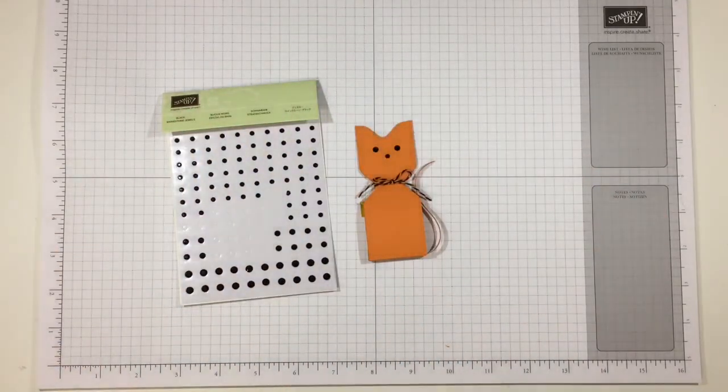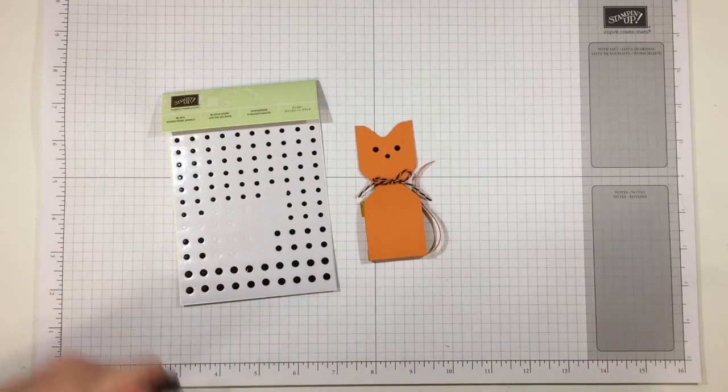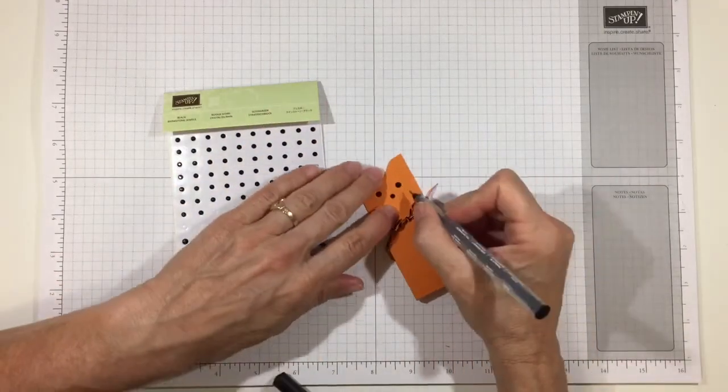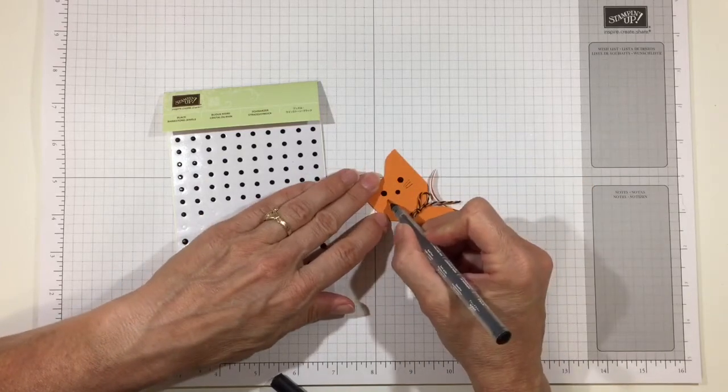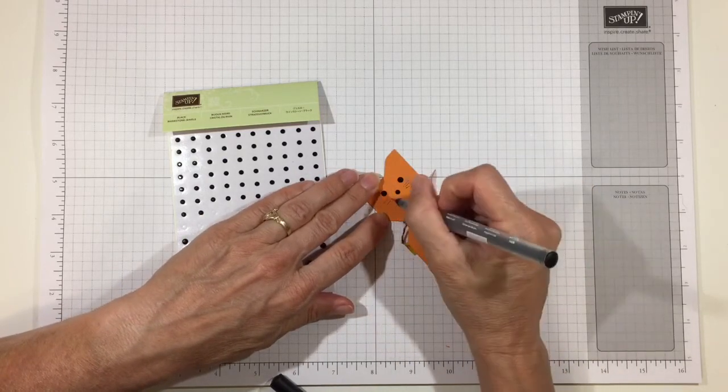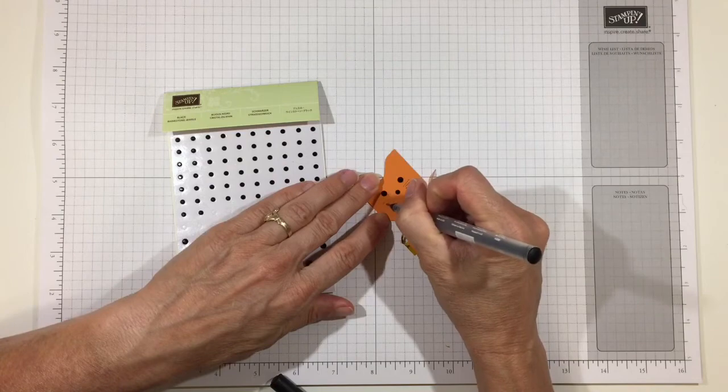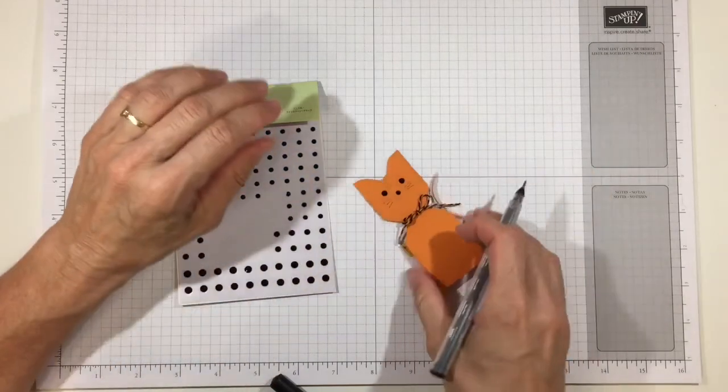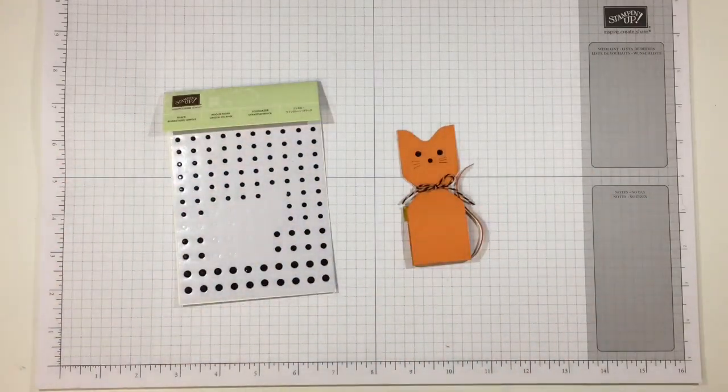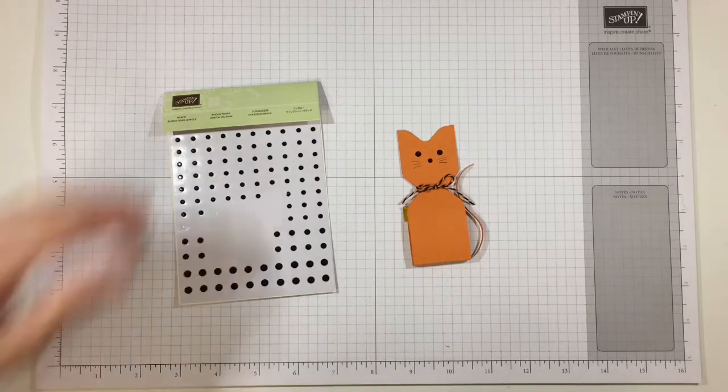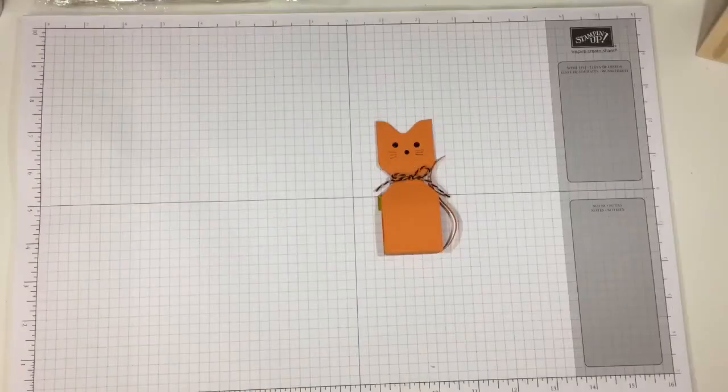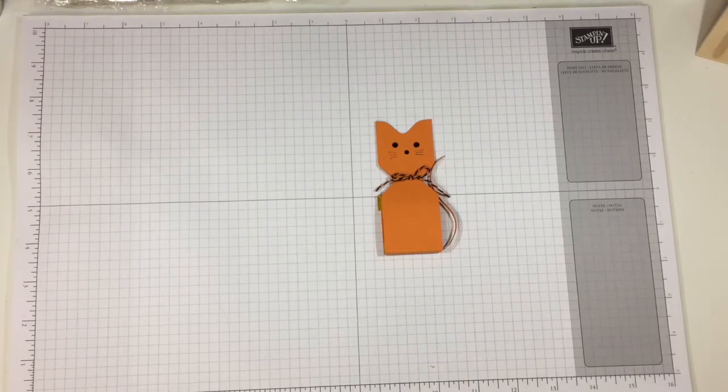And isn't he so cute? On some of them I also took a bit of a journaling pen and I just gave a few whiskers. My journaling pen looks like it's running out of ink, I guess I've been writing too much. But I gave him a few whiskers just to make him very cute. So that's all he is, a very quick project and a very cute cat.